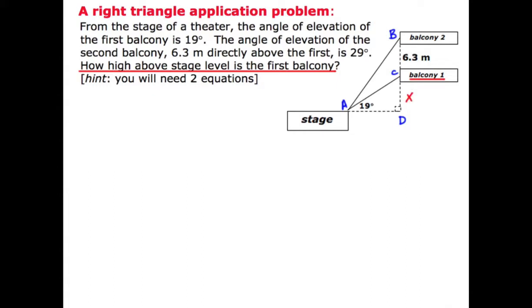Now in going back to the problem and looking at some of the additional details they give us, they tell us the angle of elevation to the first balcony is 19 and we can see that here in the diagram. But they also tell us the angle of elevation to the second balcony is 29 degrees.